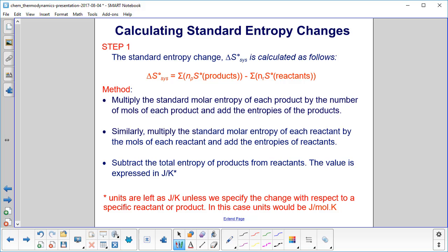Let's add a little more detail to step one from the previous slide. We showed that the standard entropy change is calculated as follows. So what do we do? Here's step one, the first bullet: Multiply the standard molar entropy of each product by the number of moles of each product, and add the entropies of the products. Now you know the number of moles is also the coefficient in front of your compound or element in your balanced equation.